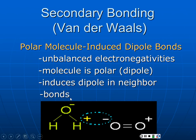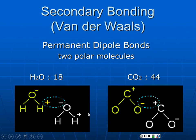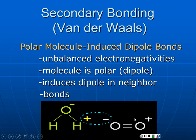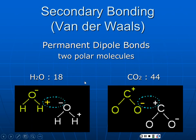The bond can be stronger if one molecule is permanently polar. Water (H₂O) has permanent polarization — hydrogen is permanently positive, oxygen is negative. This can induce polarization in a neutral molecule like O₂. The positive hydrogen attracts electrons, creating a polarization in the O₂ molecule. This is stronger because we have a permanent pole, giving water fairly decent solubility for oxygen — which is why fish can breathe underwater.